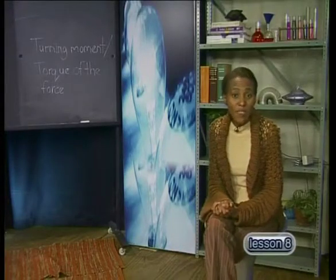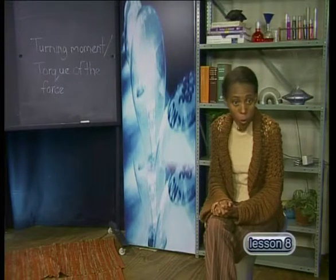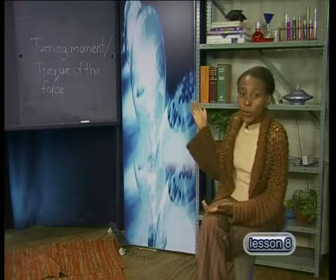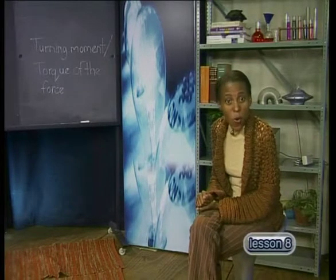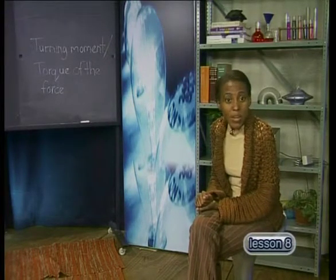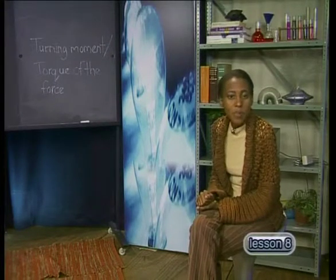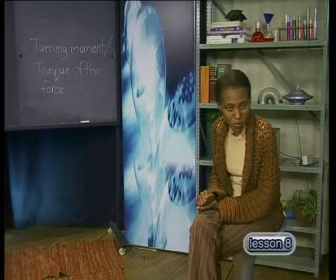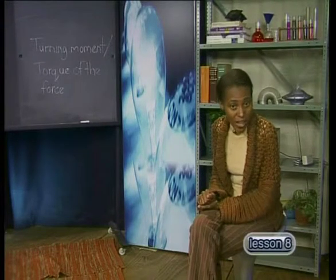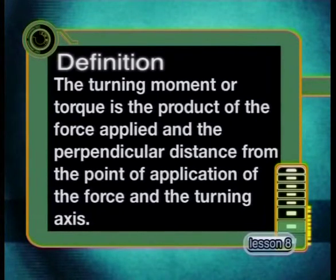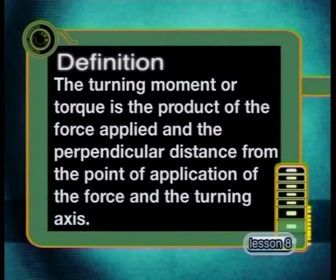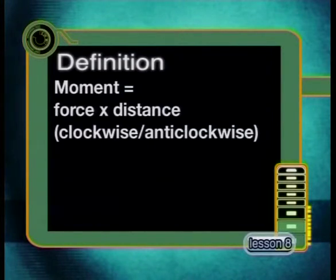The turning effect of a force is called its turning moment or torque. We use these terms — moment or torque — to describe the relationship between the force applied and the perpendicular distance to the fulcrum. The turning moment or torque is the product of the force applied and the perpendicular distance from the point of application of the force and the turning axis. We state the direction of the moment as being clockwise or anticlockwise.